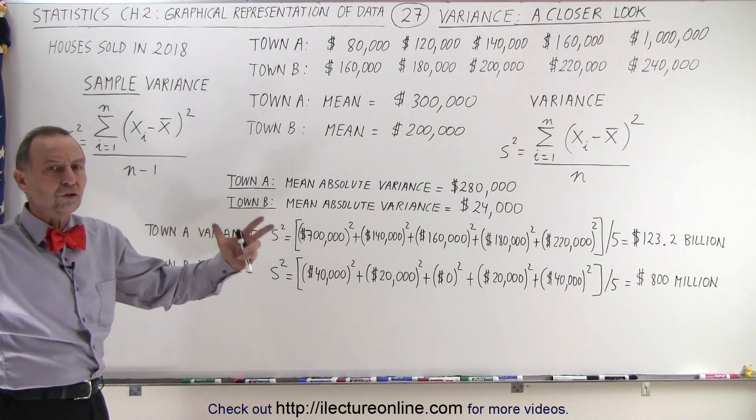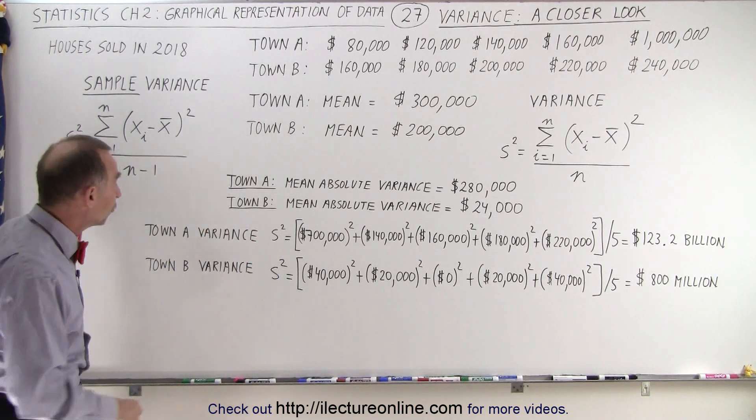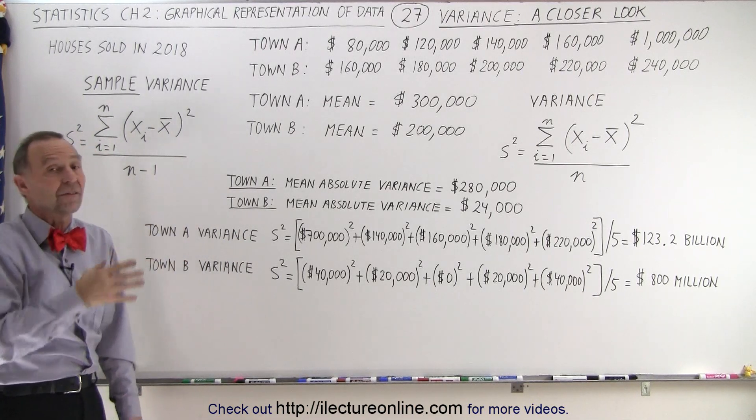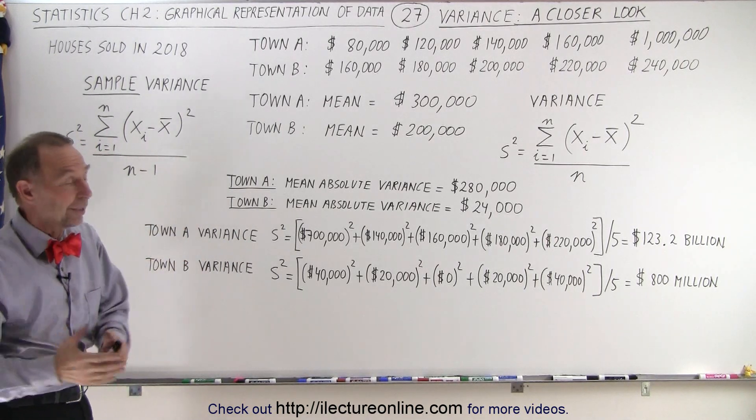If your sample is a large number, let's say a hundred houses out of a total of a thousand sold, then a hundred minus one is ninety-nine and there's not a lot of difference between dividing by a hundred or dividing by ninety-nine.